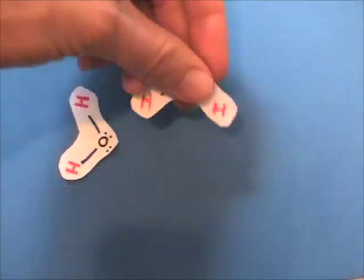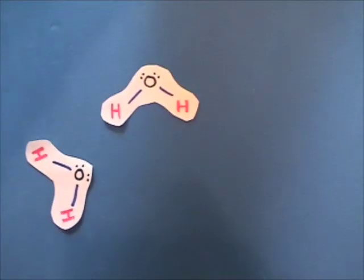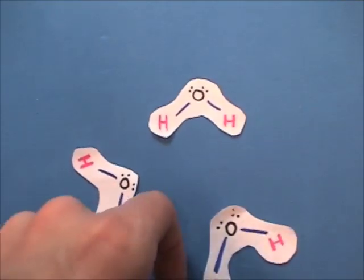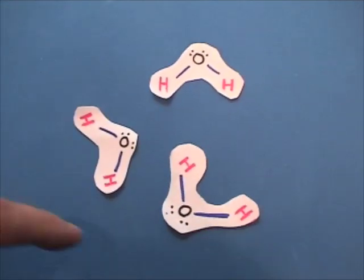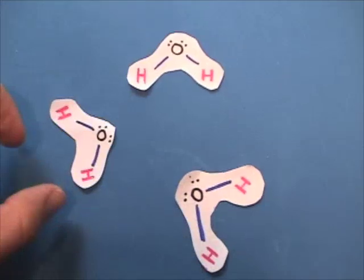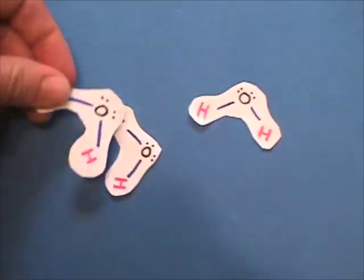Remember that when it forms a solid, it actually takes up more space than when it was in the liquid form. So the solid ice is less dense than water. That's why ice floats. And these hydrogen bonds can be used to explain this, that a negative part of these molecules attracts the positive parts.